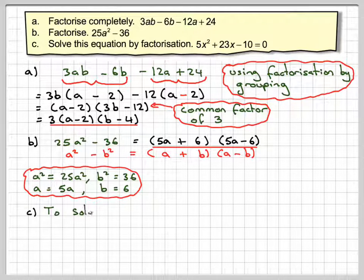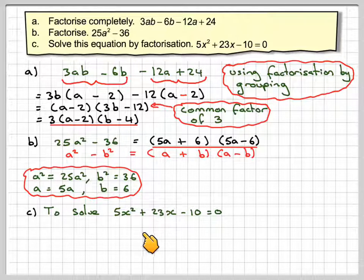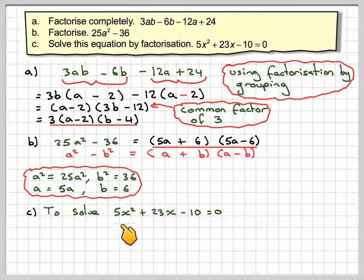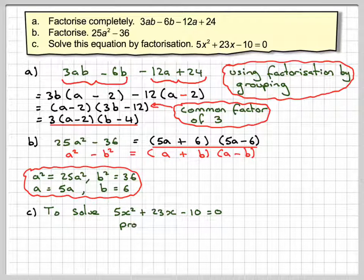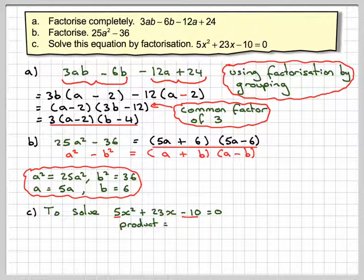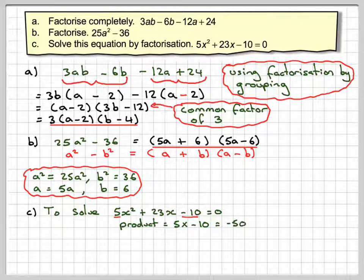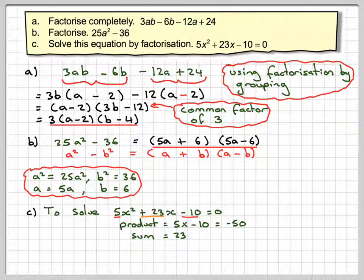The final thing is to solve 5x squared plus 23x minus 10 is equal to 0. Because this is not 1x squared, it's probably better to use this method. The product is all going to be 5 times minus 10, which gives me minus 50. The sum is the middle number, which gives you 23.